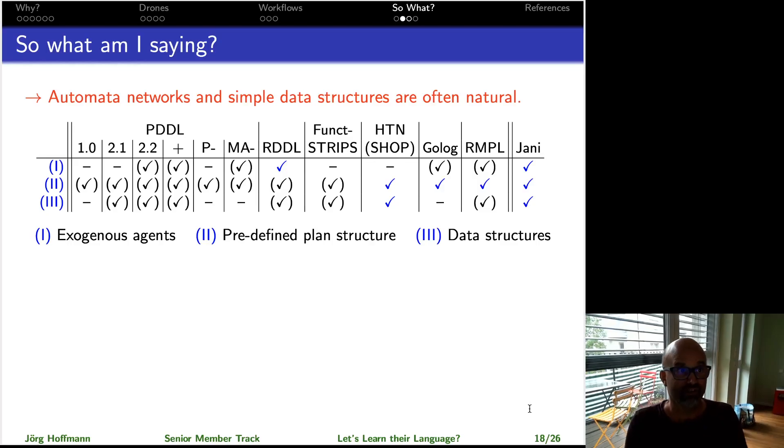So what am I saying? Well, if these are the features of planning problems you happen to be interested in, and of course this is only for some planning problems, not all, okay? I'm only talking about planning problems of a particular kind. Exogenous agents, predefined plan structure, and simple data structures are important features that you want to be able to capture simply and naturally. Then, model-checking languages, and in particular JANI, or a small fragment of JANI, JANI is a huge language, a small fragment of JANI, do the job just awesomely for you.